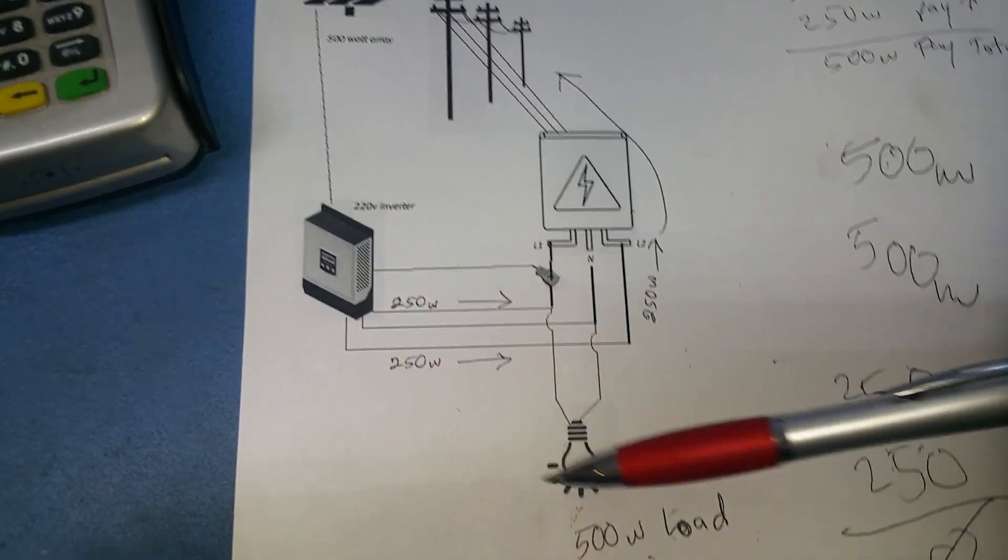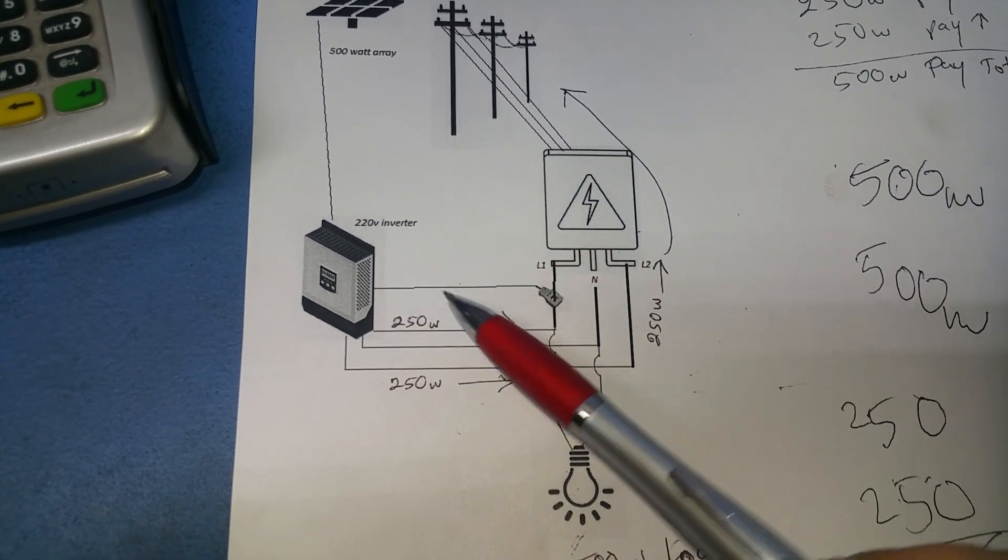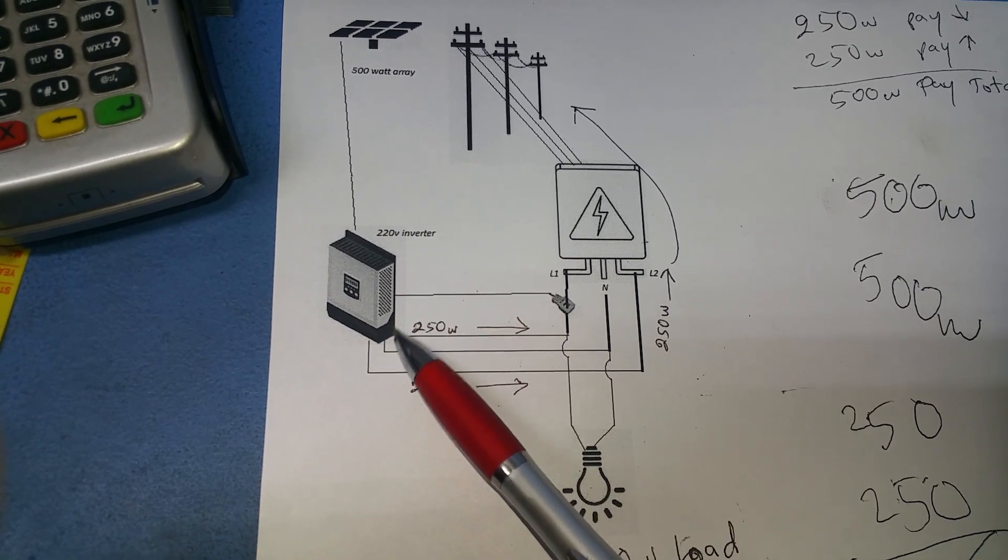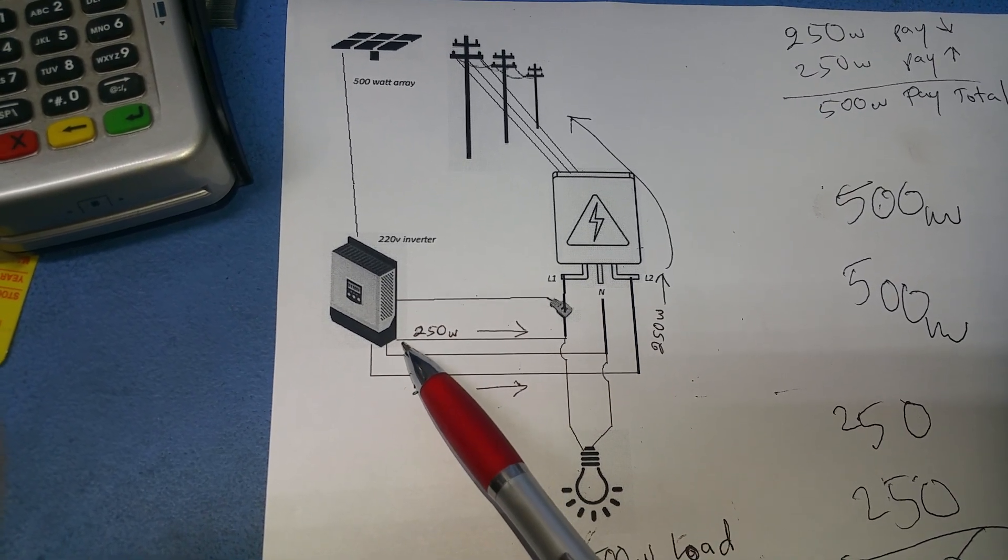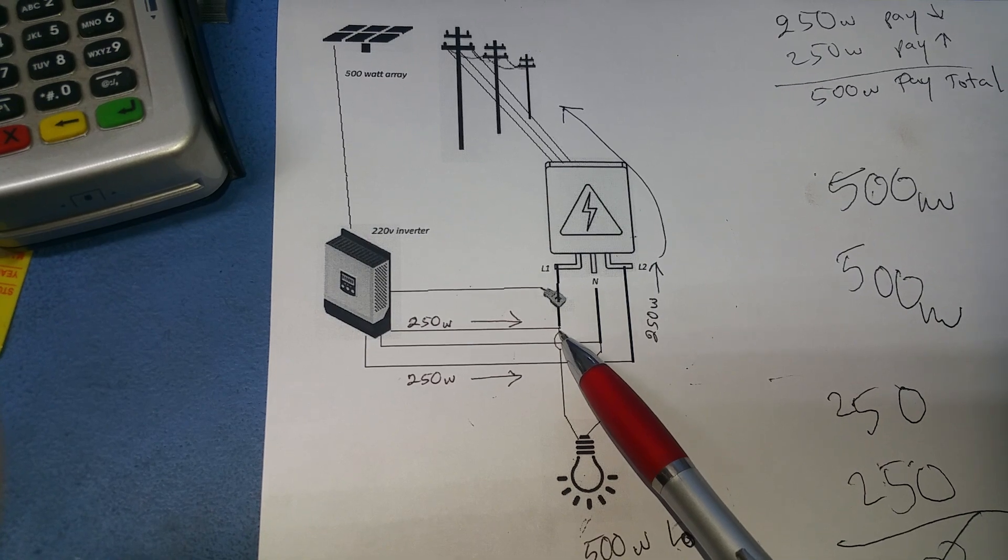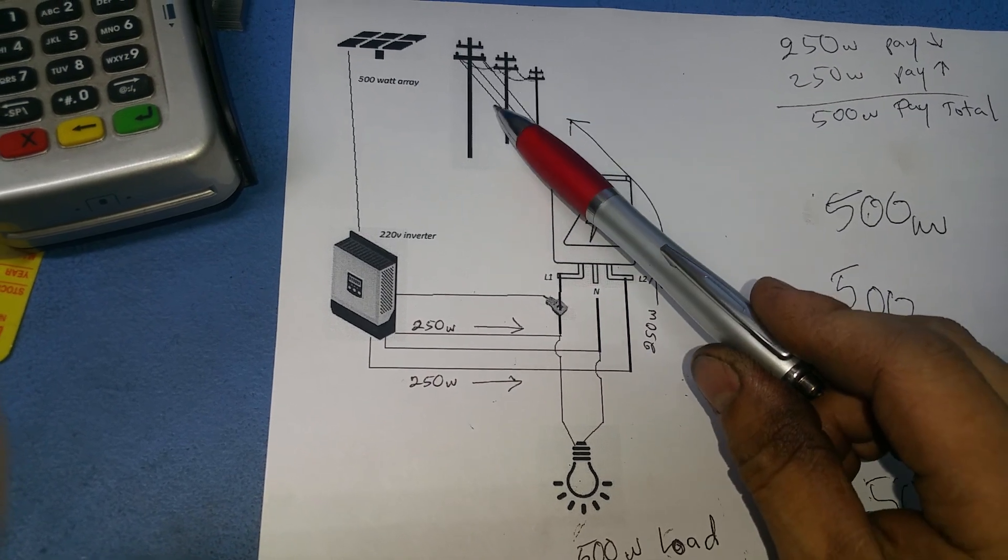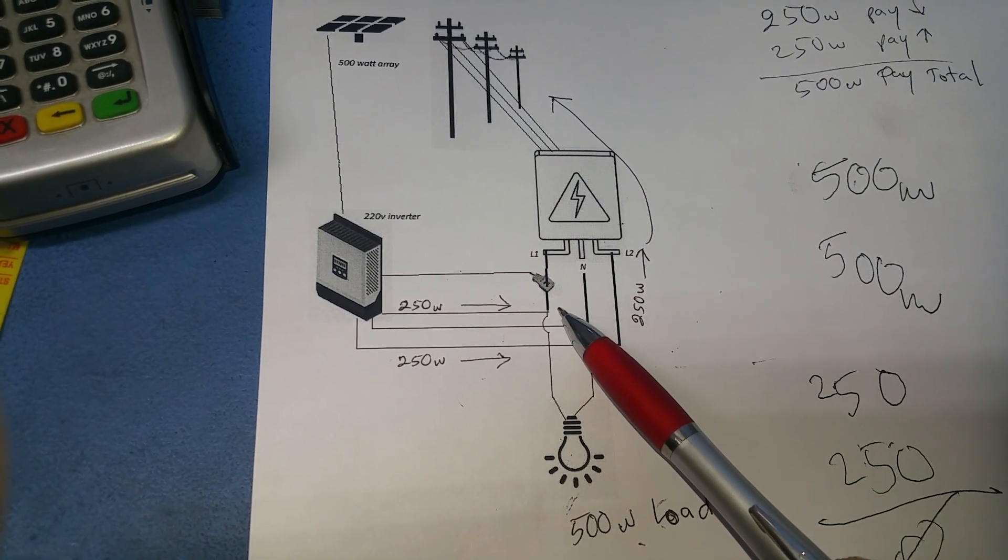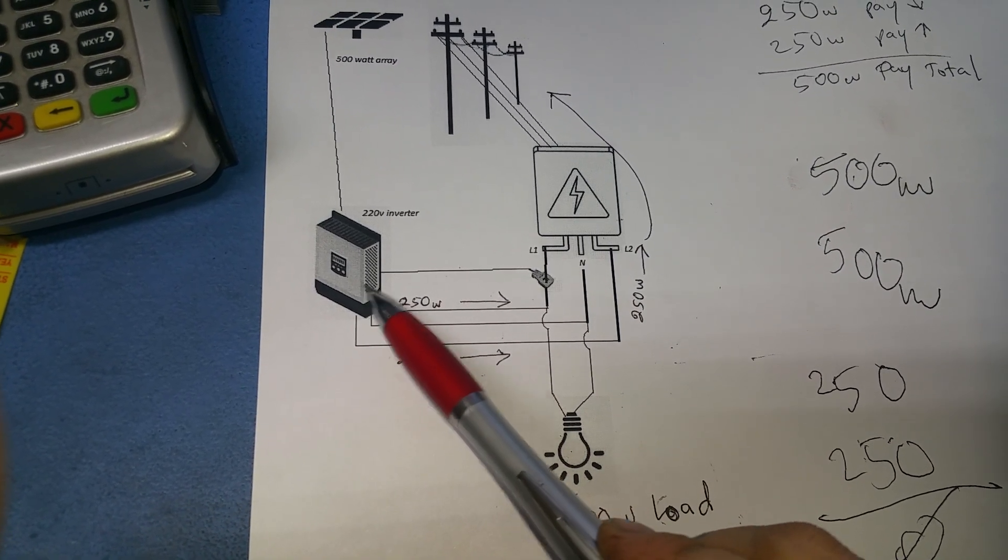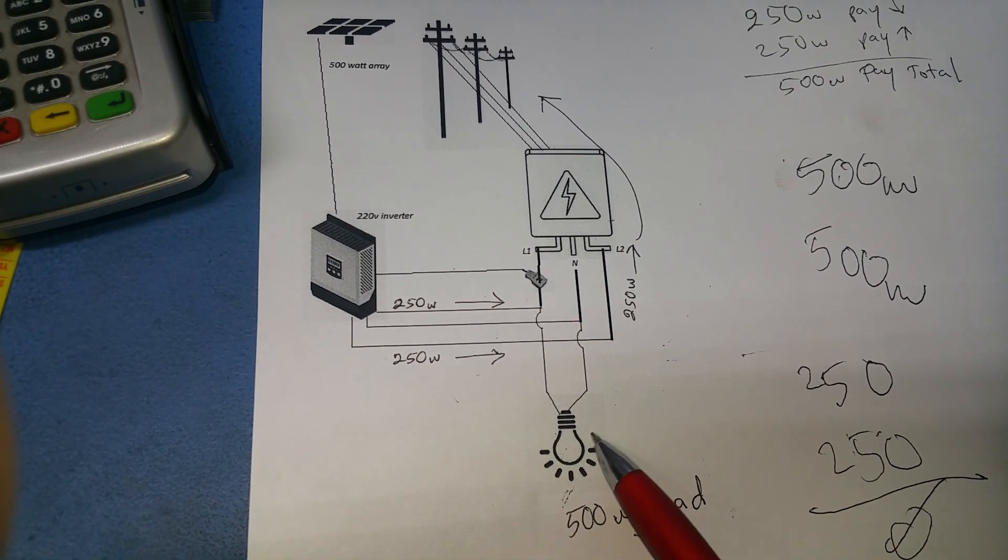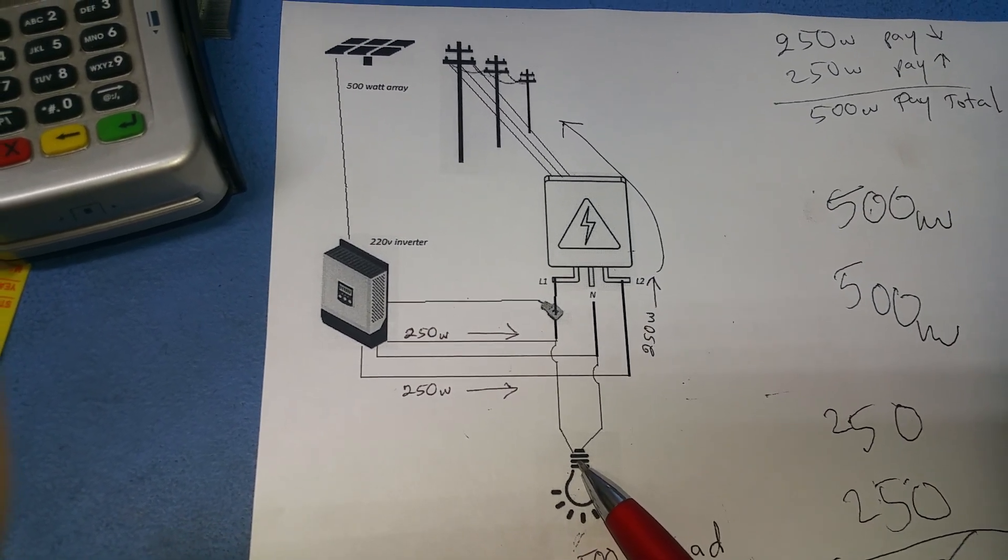The inverter generates 500 watts. This 220 volt inverter is connected to L1 and L2, so it puts out 250 watts through L1 to accommodate for the 500 watts I'm using. Therefore I will only be taking power from the grid which is 250 watts, plus the 500 watts from my inverter to power this unit. So I'm actually saving 250 watts by using my solar array.